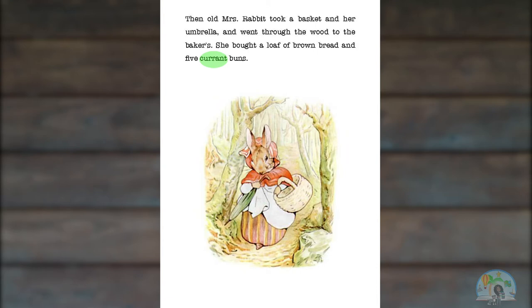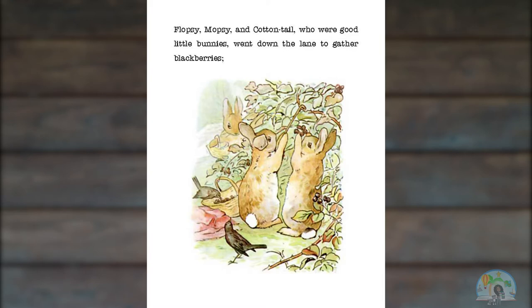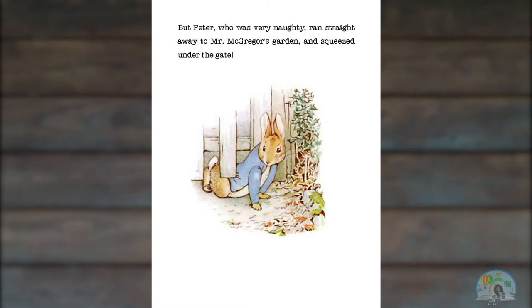Flopsy, Mopsy, and Cottontail, who were good little bunnies, went down the lane to gather blackberries. But Peter, who was very naughty, ran straight away to Mr. McGregor's garden and squeezed under the gate. Let's look at the word naughty. What do you think it means? I'm seeing that Peter is doing something that Mom said not to do — she said not to go into Mr. McGregor's garden, and that's exactly what he's doing. And it says Flopsy, Mopsy, and Cottontail were good little bunnies, and Peter is doing the opposite. So maybe the word naughty is meaning the opposite of good. I'm thinking the word naughty means disobeying.